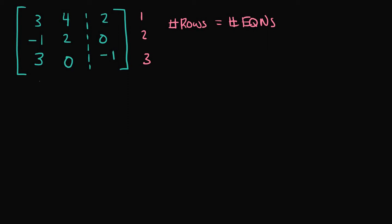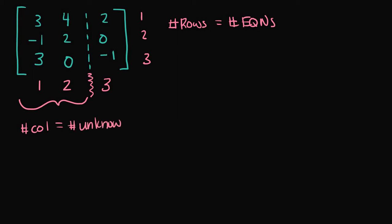Now, if we look at the number of columns, we have 1, 2, 3 columns. And since this is an augmented matrix, the column on the right side of this dashed line represents the right-hand side of each of the equations. If we look at just the left side of the dashed line, we have 2 columns. And since we have 2 columns here, we're going to need 2 unknown variables, because the number of columns on the left side of the dashed line in an augmented matrix represents the number of unknown variables.